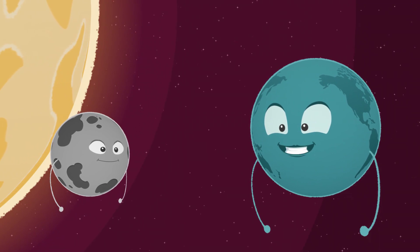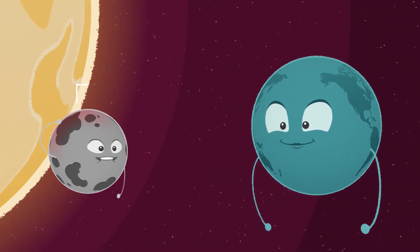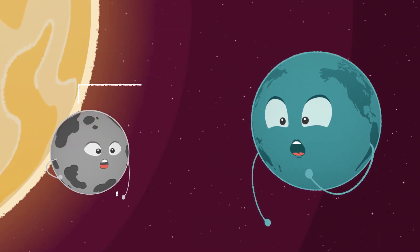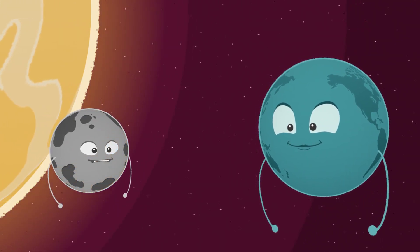Don't get all hot, Mercury. Too late. My temperature can reach 430 degrees Celsius where I'm facing the Sun, and drop to 180 degrees Celsius where I'm not. That's why I packed my swimsuit.